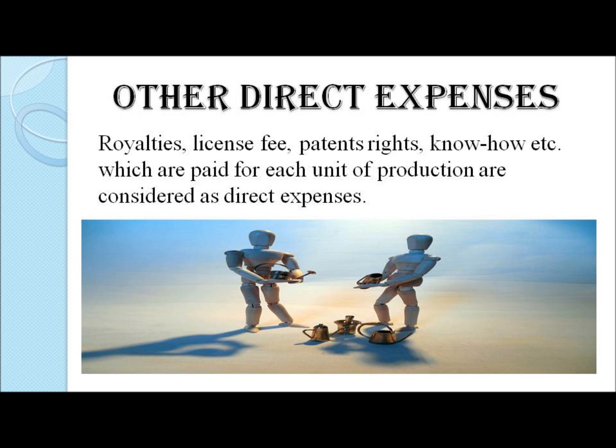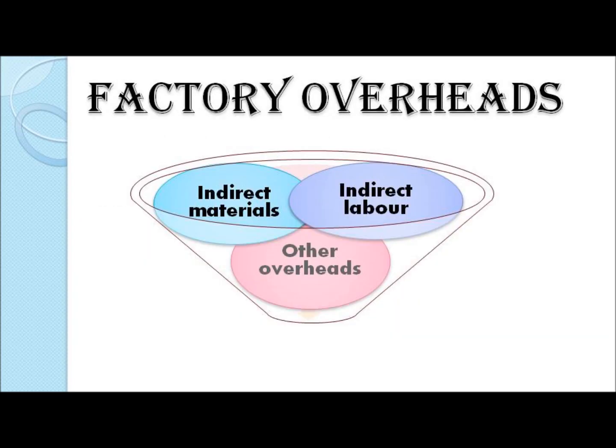Together all these direct costs are termed as prime cost. Once the prime cost is calculated, we sum up the total cost of factory overheads. Factory overheads are those overheads which are indirectly involved in the production process. This involves indirect material, indirect labor, and other indirect expenses.